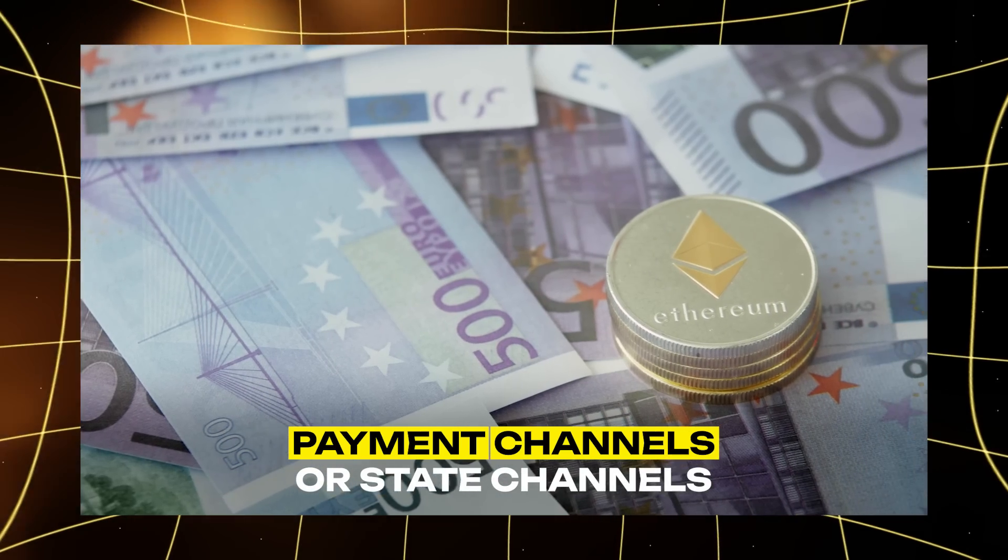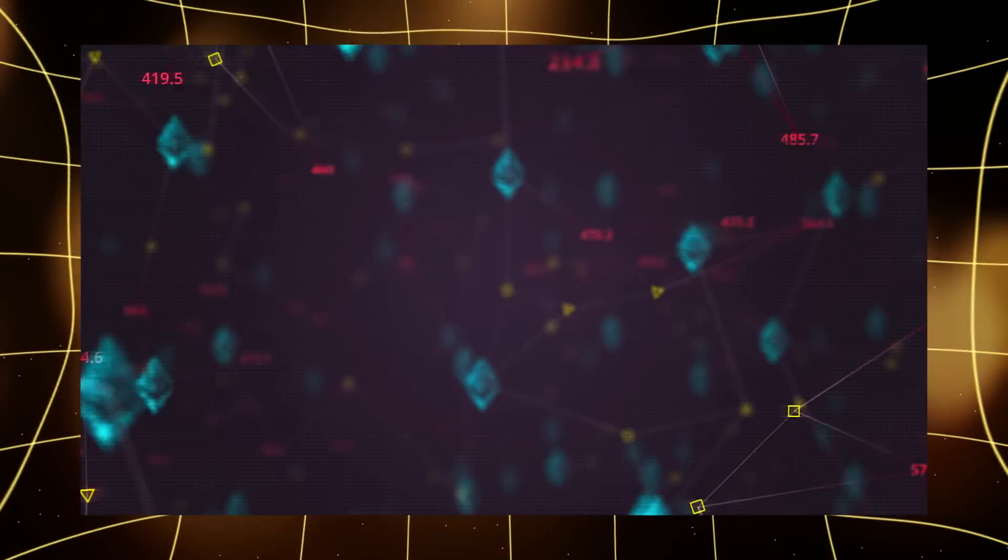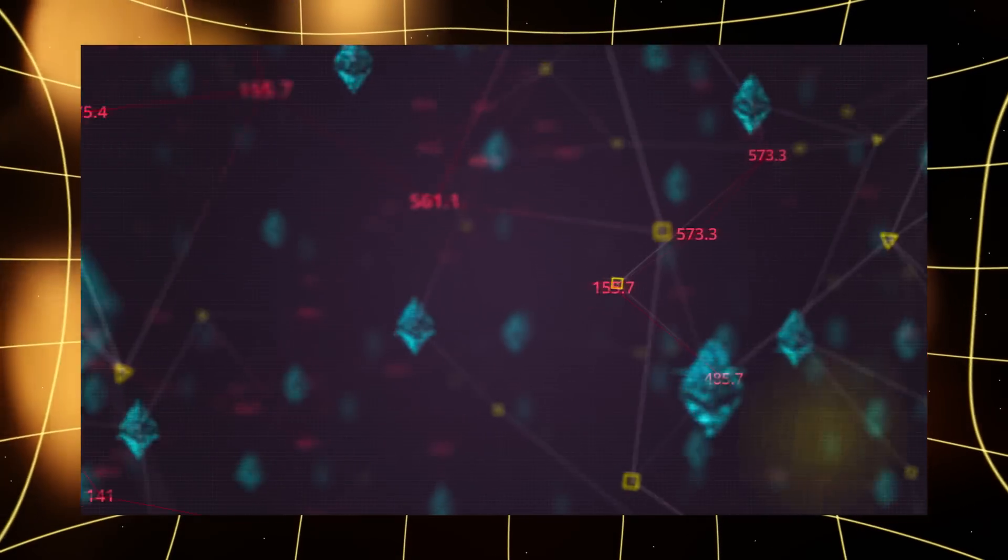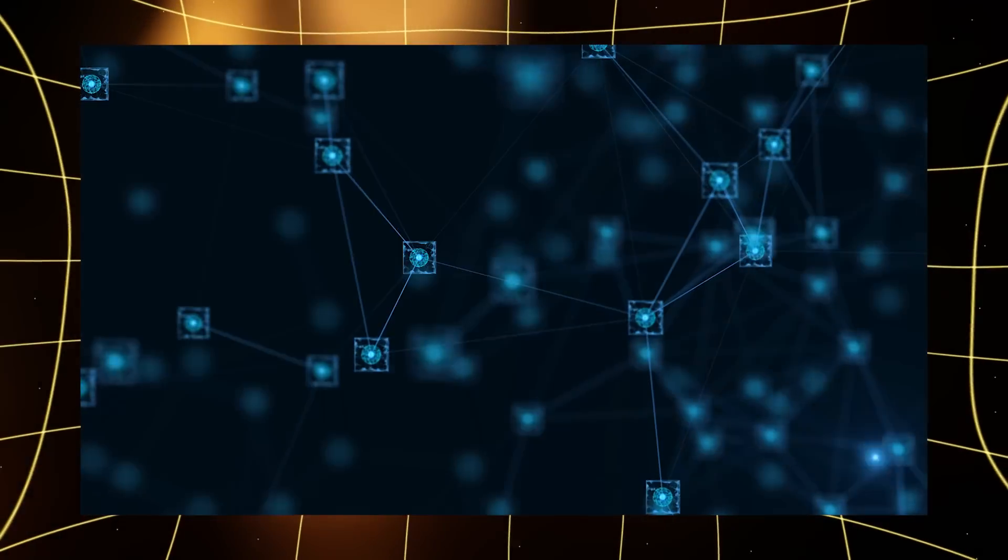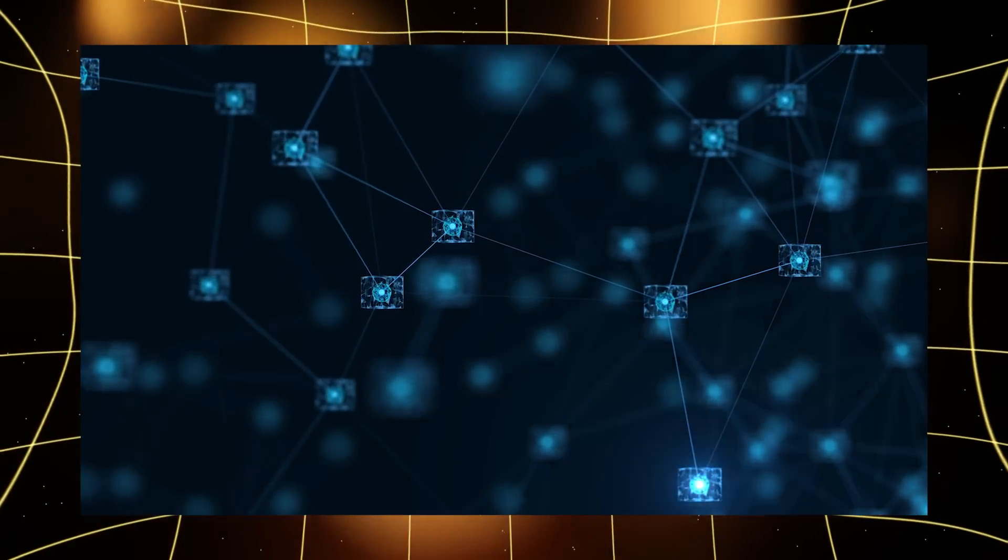First up, payment channels or state channels. These allow numerous transactions to happen off-chain, only recording the final tally on the main blockchain. Perfect for frequent small payments, like buying your daily coffee with crypto.